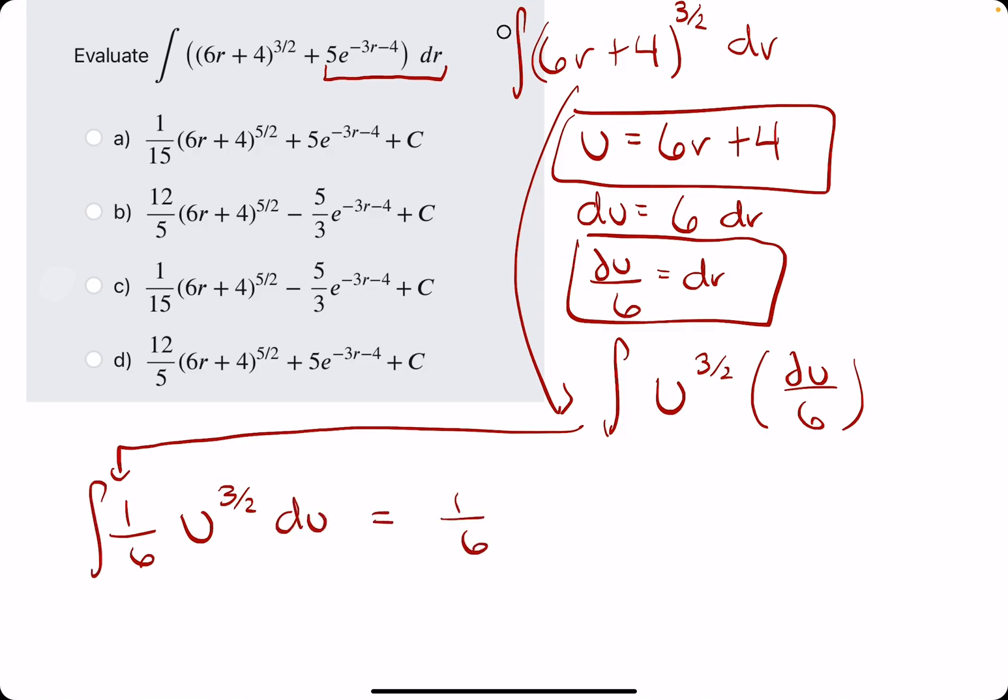Taking the antiderivative, we leave the 1/6. We add 1 to the exponent. Anytime you're adding 1 to a fraction, just take the top number, 3, plus the bottom number. 3 plus 2 is 5, and we'll leave it over 2. So we added 1 to the exponent, but we can't forget to divide by whatever that new exponent is.